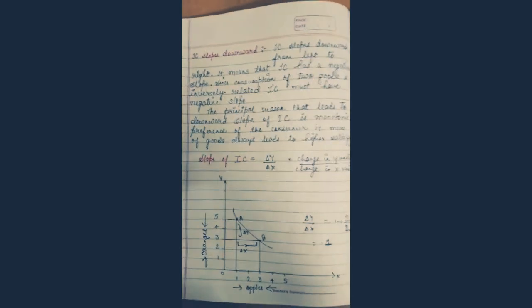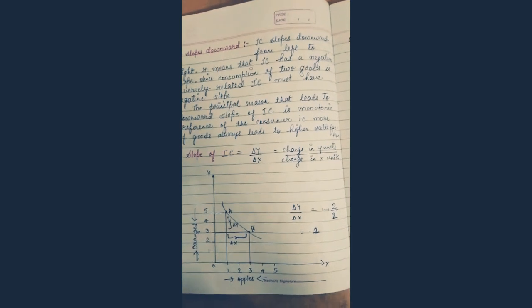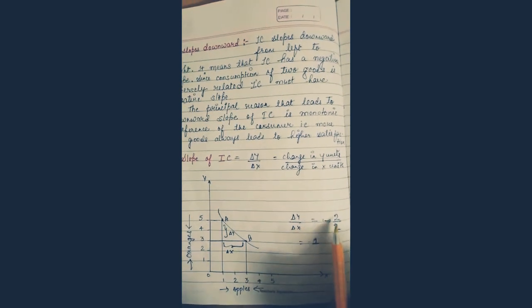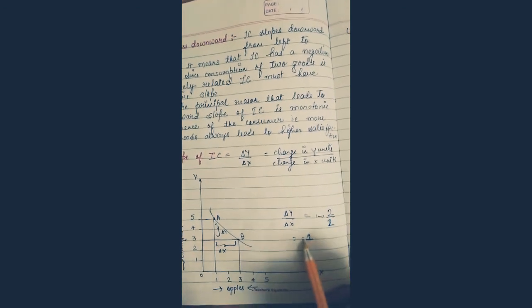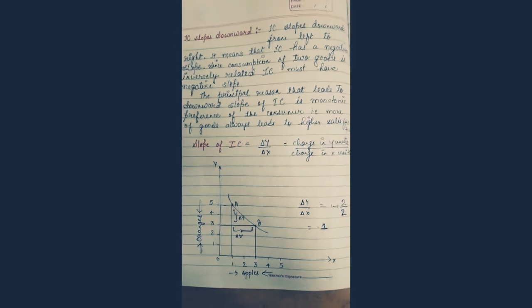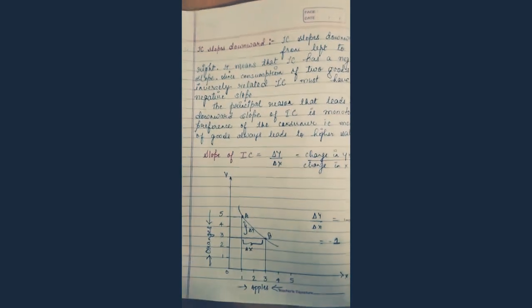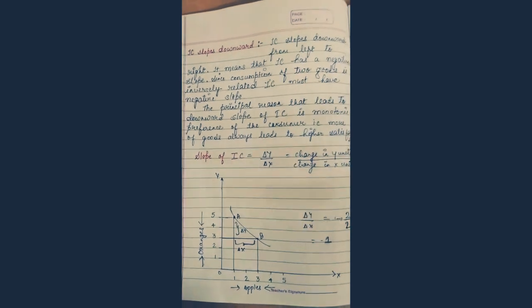The slope of IC is equal to Δy upon Δx. Δy refers to change in Y units of good, and Δx refers to change in X units of good. Δy changes from five to three — that is two. Δx changes from one to three — that is also two. Two divided by two equals one, so the slope of IC is equal to one. This was the first property of IC: IC slopes downward, it is negatively sloped, and slope of IC is Δy upon Δx.